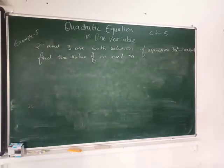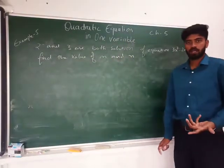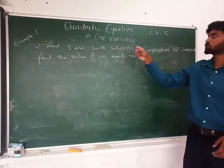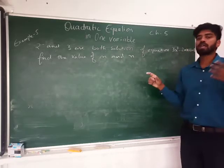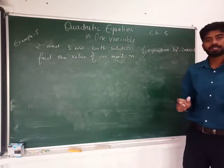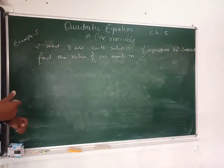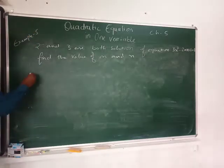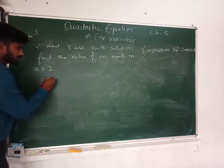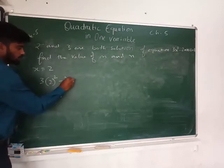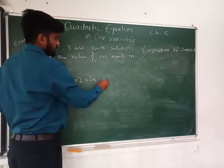Let's look at Example 5 — a very interesting example. Here, 2 and 3 are both given as solutions of the equation, so you don't need to prove anything. Instead, you have to find the values of M and N. First, put x = 2 into the equation. I get 3(2)² minus 2M times 2 plus 2N = 0, which gives 12 minus 4M plus 2N = 0.